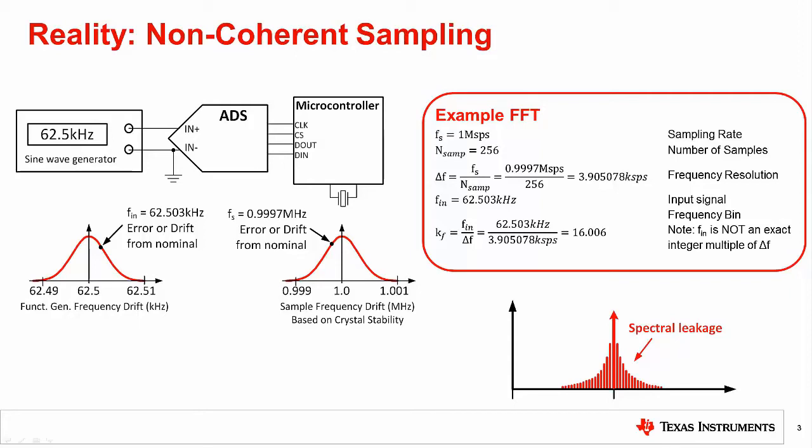Ideally, the sampling rate is set to 1 mega-samples per second, but in reality, it is at 0.9997 megahertz and will drift with time and temperature. The end result when you work through the math is that we no longer have coherent sampling, and the FFT will have spectral leakage. So this simple method cannot be used for coherent sampling.